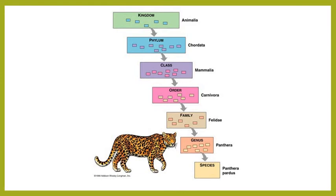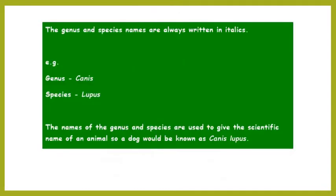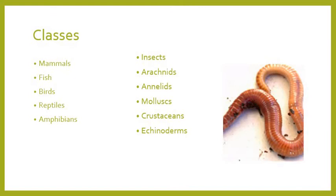There are different species of panthers, so it's important we have the specific name — Panthera pardus. A key note: the genus and species names are always written in italics. For example, genus Canis and species lupus — so a dog is known as Canis lupus, written in italics. The genus and species names together give the specific name of an animal.